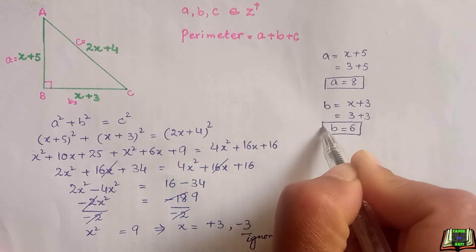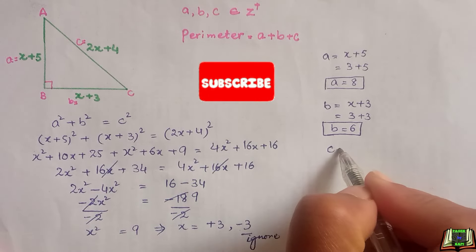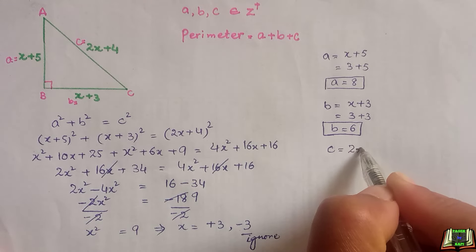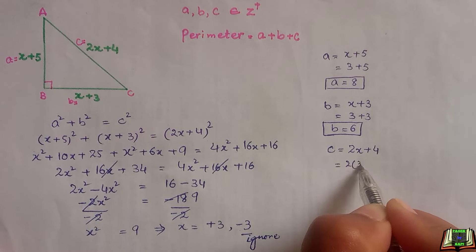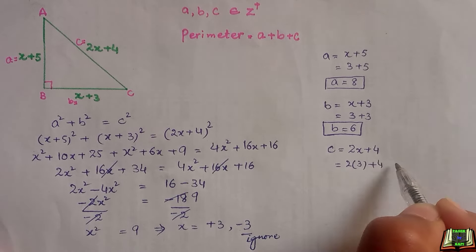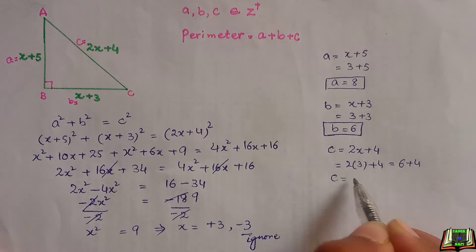Now we are going to find out the third side c. c equals 2x plus 4. 2 times 3 plus 4. 2 times 3 is 6 plus 4, so c is equal to 10.